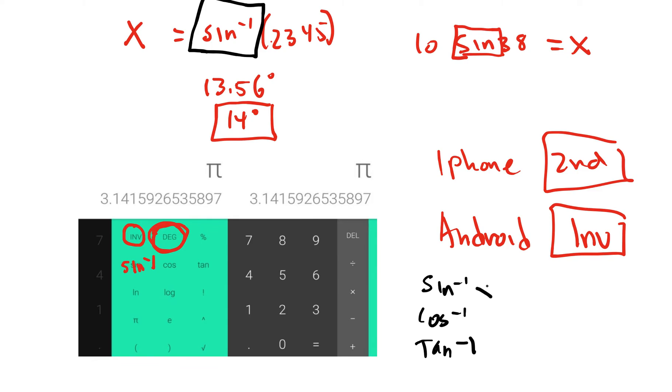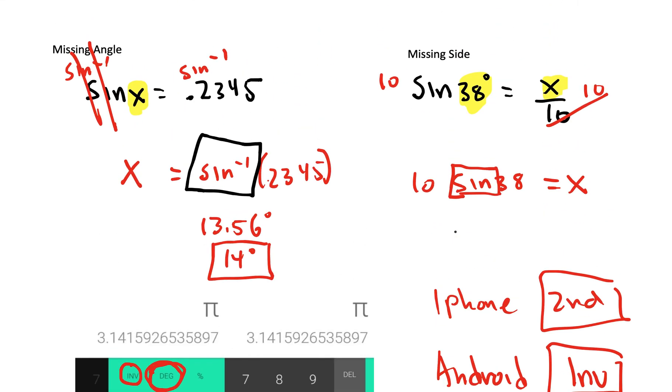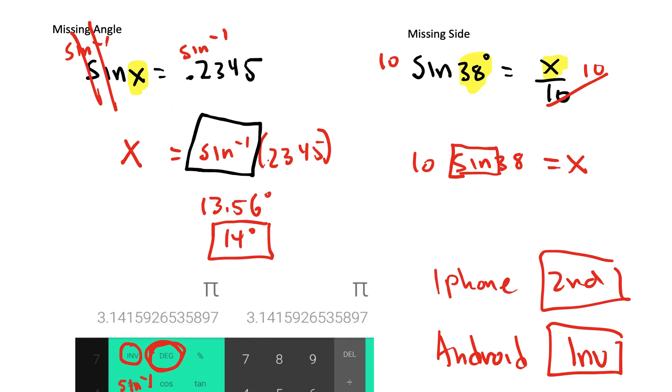Those are when we have a variable connected. We end up using that to separate the variable and get the variable by itself. So when we have the letter like x connected to sine, we had to inverse both sides and use sine to the negative 1. When we already had a number, we just punched that number into the calculator.